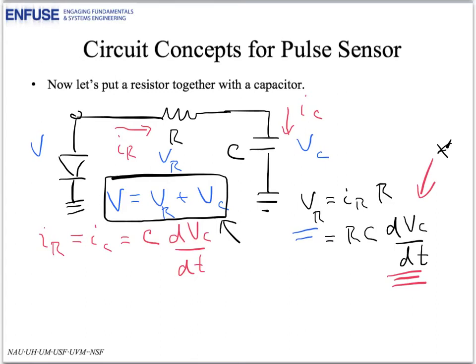So the bottom line is if the source voltage here is changing quickly with time, then V sub C is small. And if the source voltage is changing slowly with time, then V sub C is large.